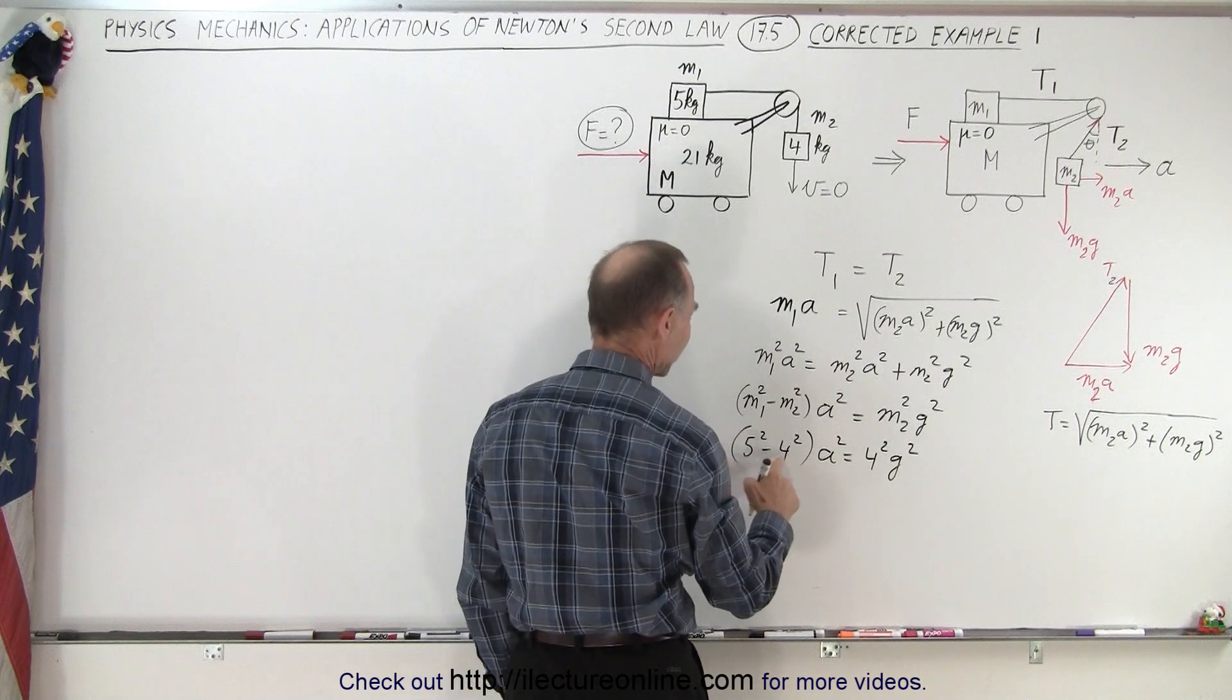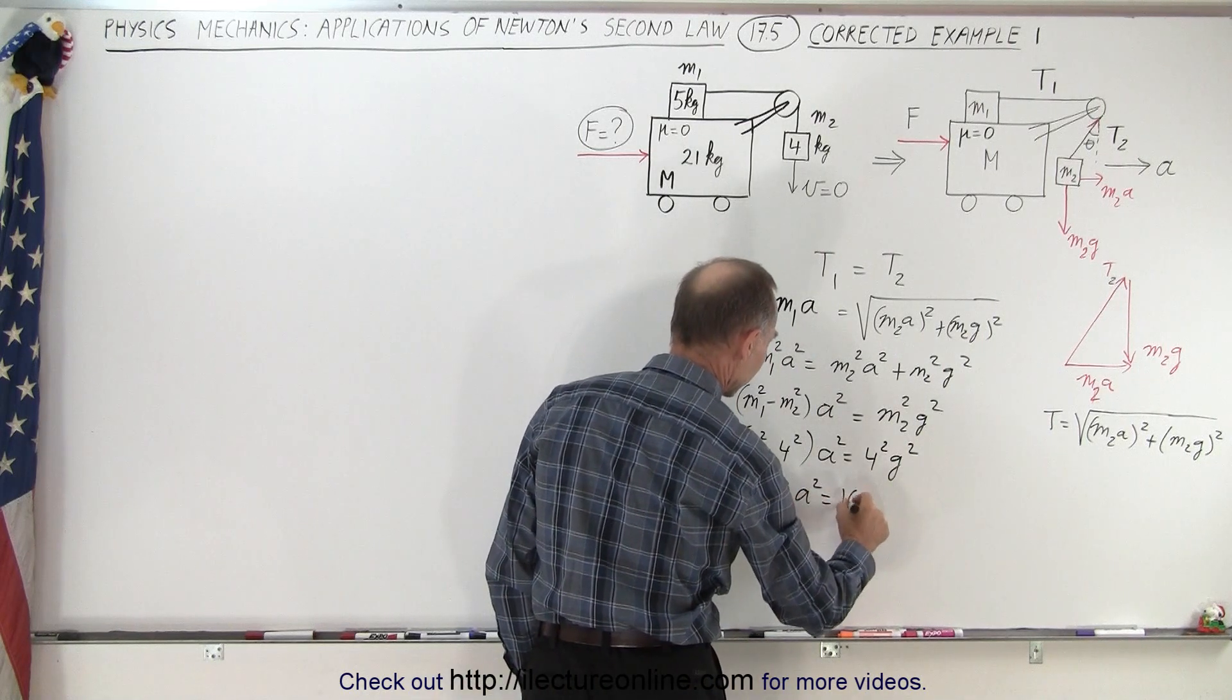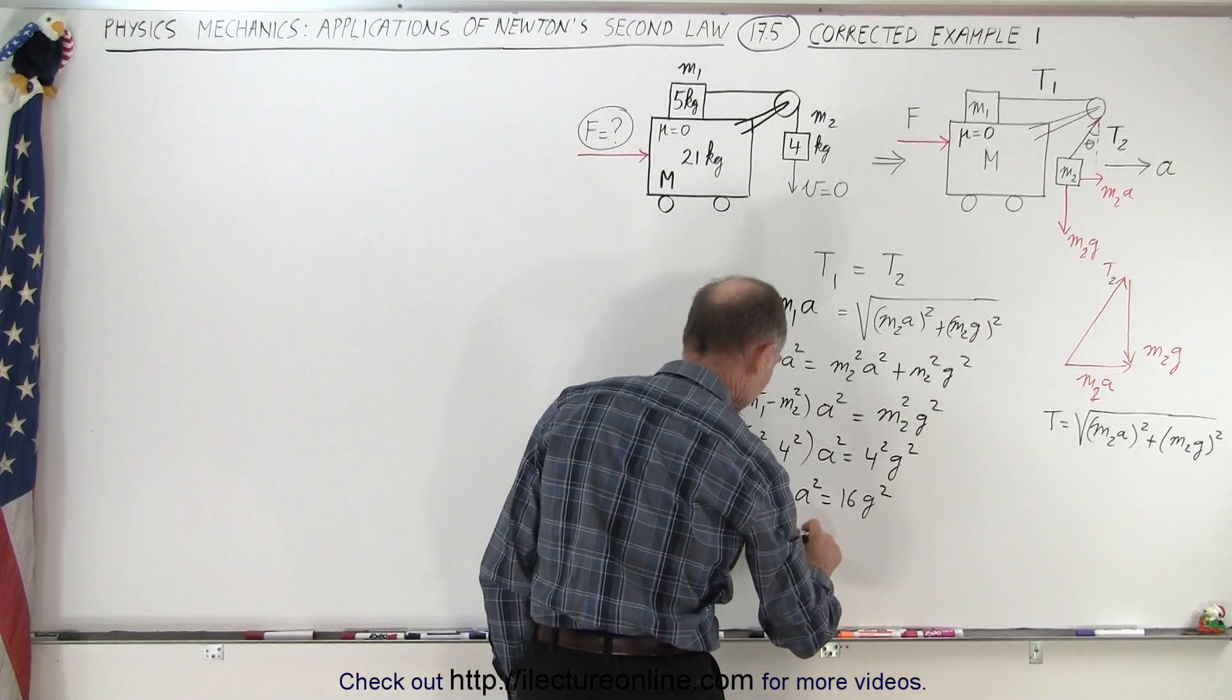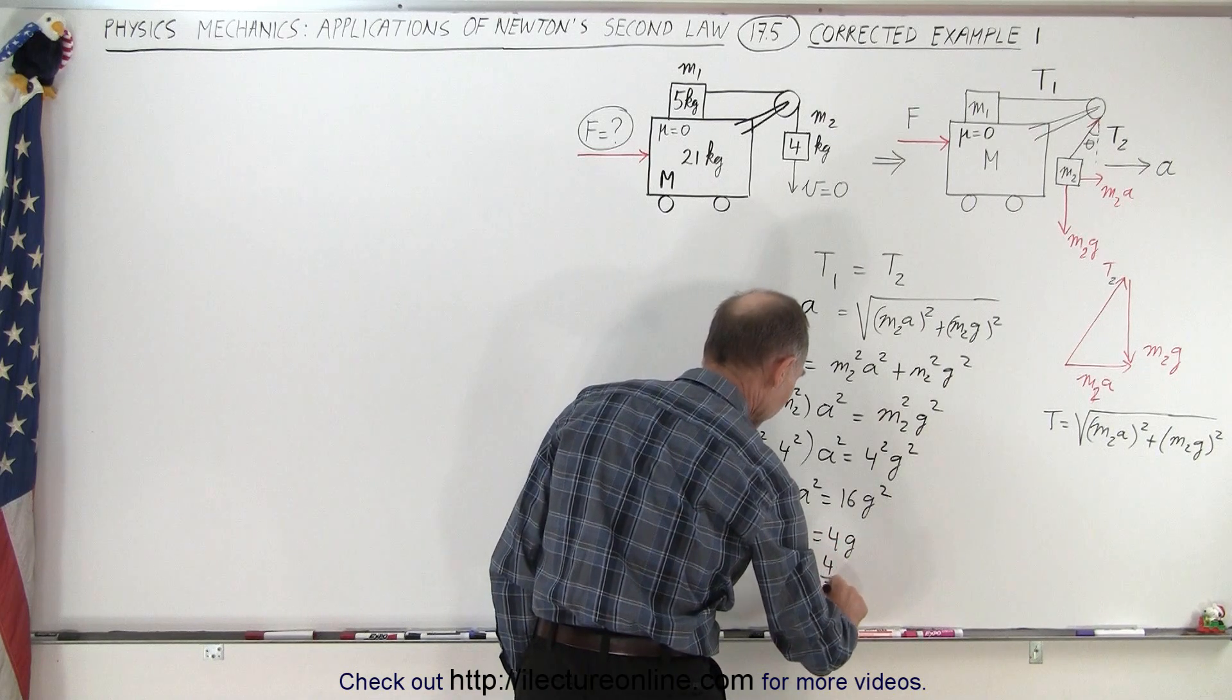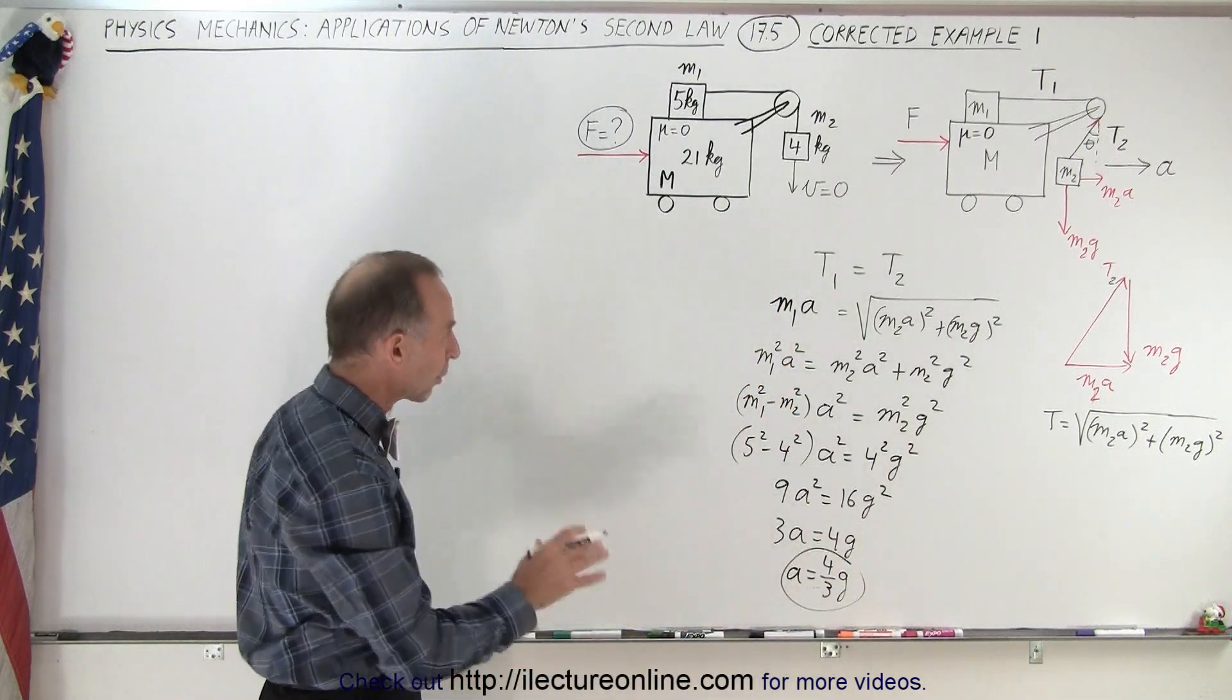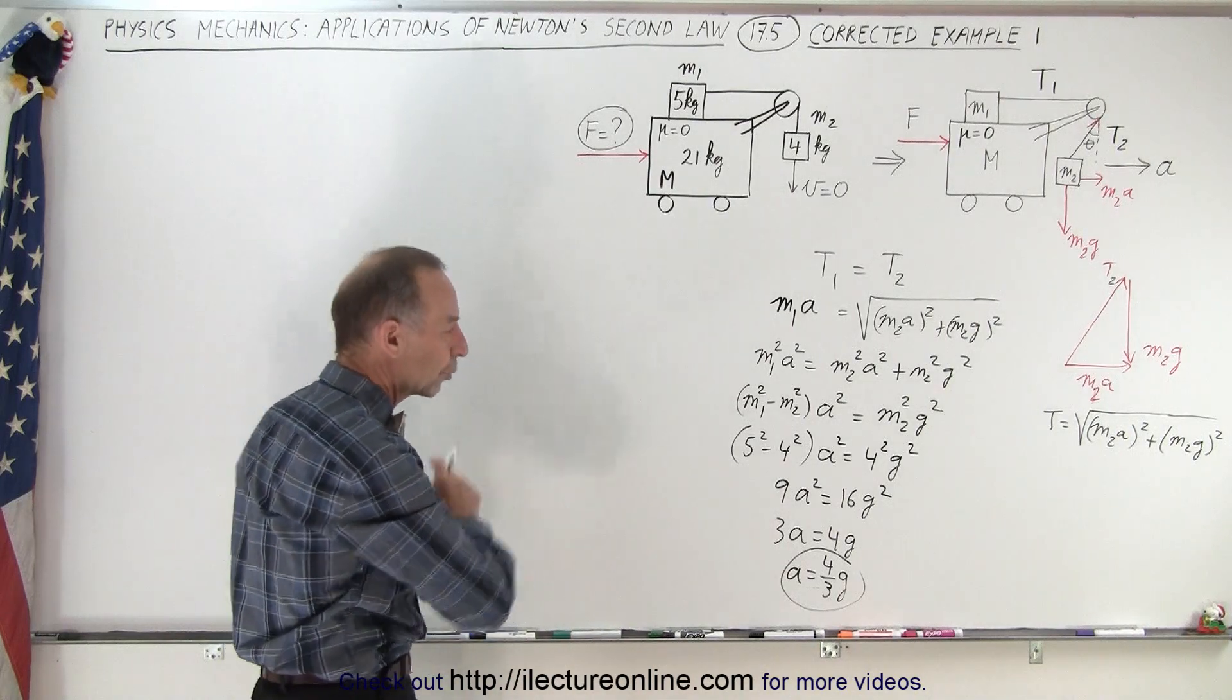So it would be 25 minus 16, which is 9a squared equals 16g squared. Take the square root of both sides, we get 3a equals 4g, or a must be 4 thirds g. So that's the solution, the force required is such that the whole system will be accelerated at 4 thirds g.